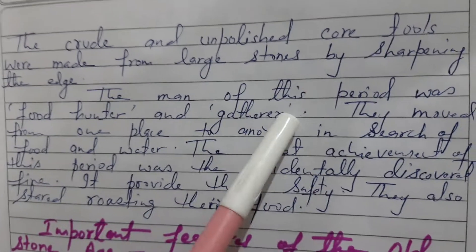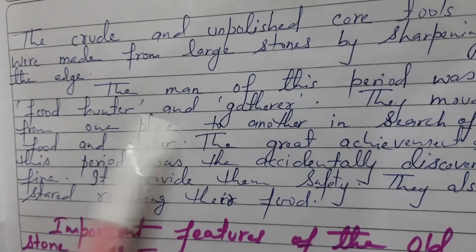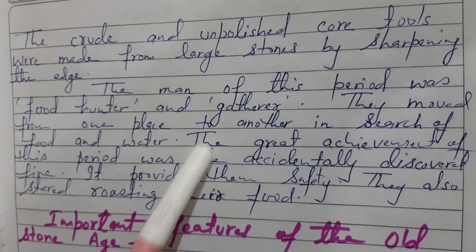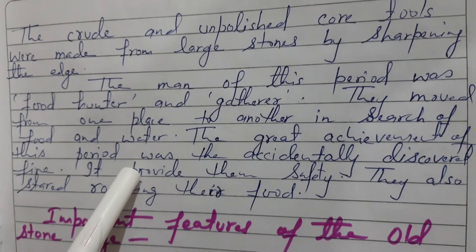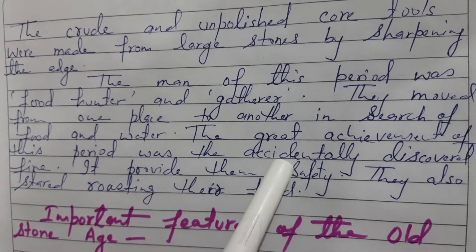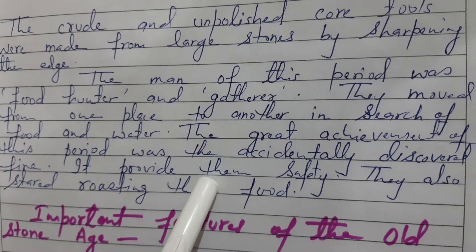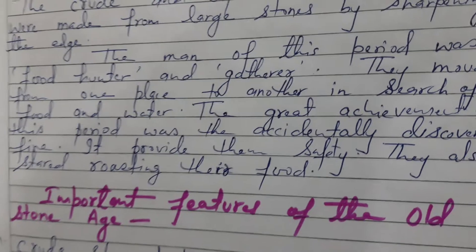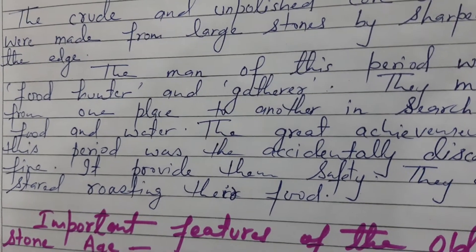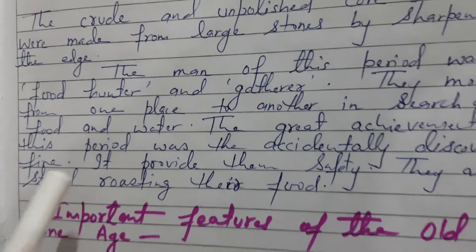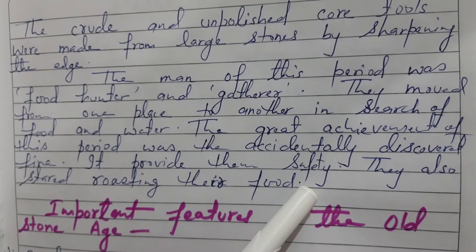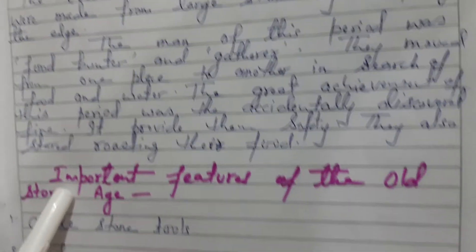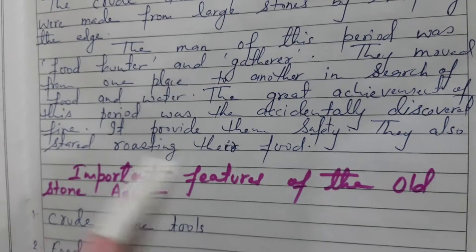The man of this period was a food hunter and gatherer. They moved from one place to another in search of food and water. The great achievement of this period was the accidental discovery of fire — they rubbed two stones together and generated fire. Fire provided them safety and warmth, and they also started roasting their food.